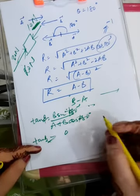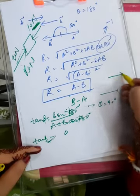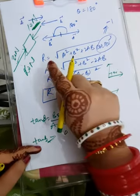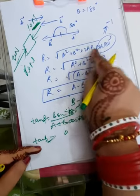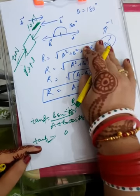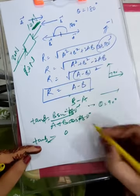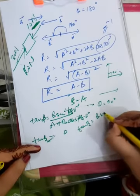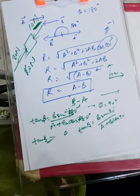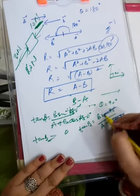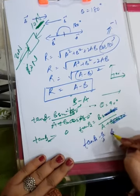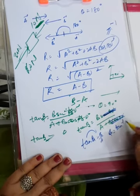Special Case 3: θ = 90°, meaning the two vectors are perpendicular to each other. Then R = √(a² + b² + 2ab cos90°). Cos 90° = 0, so this term vanishes and R = √(a² + b²). For the direction: tan β = b sin90° / (a + b cos90°). Cos 90° = 0 and sin 90° = 1, so tan β = b/a, giving β = tan⁻¹(b/a). These are the special cases of triangle law and parallelogram law.